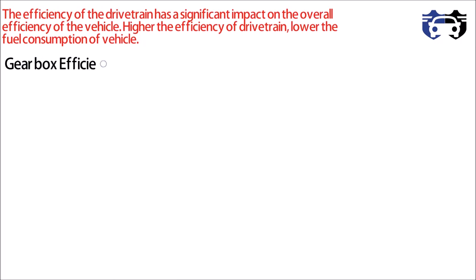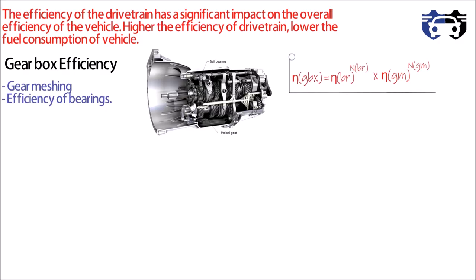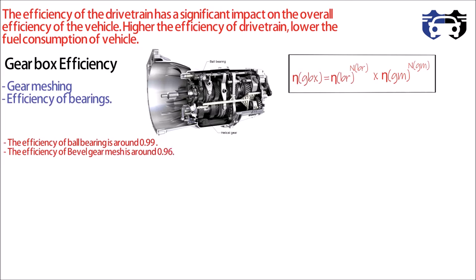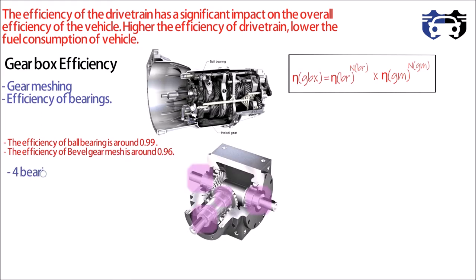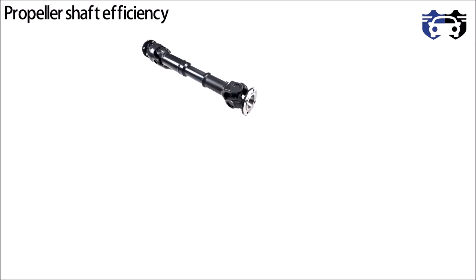First, we look at gearbox efficiency. The gearbox efficiency depends upon gear meshing and bearing efficiency. It is given by: efficiency of bearing to the power of the number of bearings, multiplied by efficiency of gear meshing to the power of the number of meshings in the gearbox. The efficiency of a ball bearing is around 0.99 and the efficiency of bevel gear meshing is around 0.96. As you can see in the figure, there are four bearings and one bevel gear meshing, giving a gearbox efficiency of 0.99^4 × 0.96^1 = 0.956.